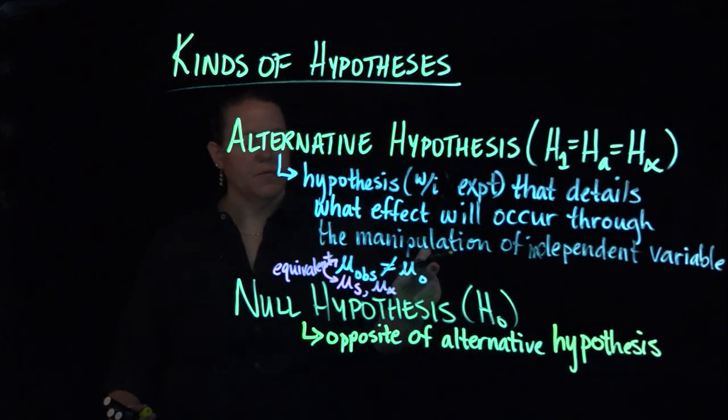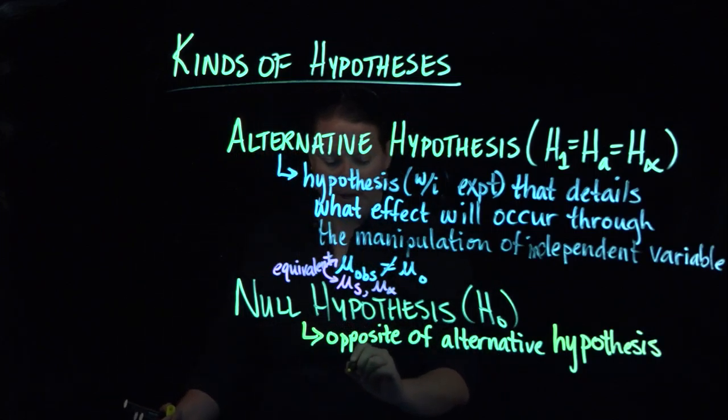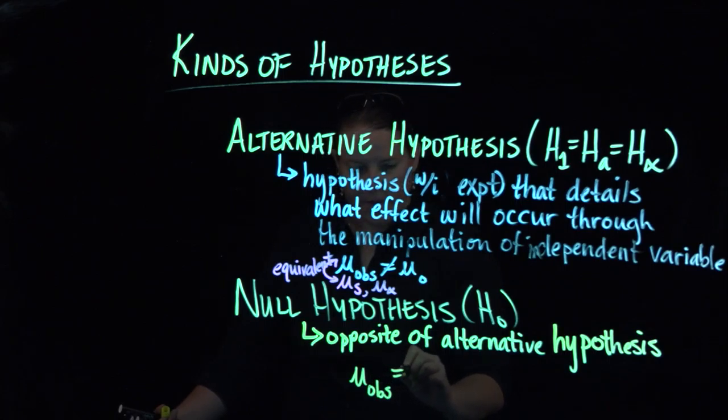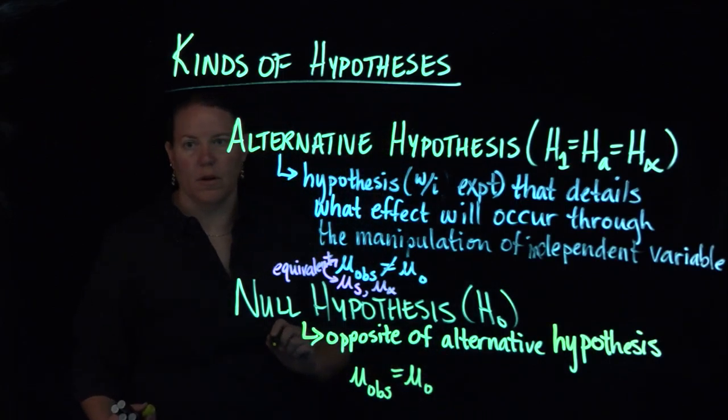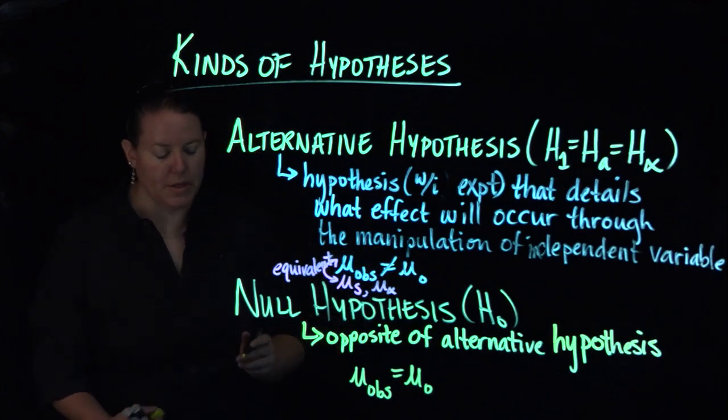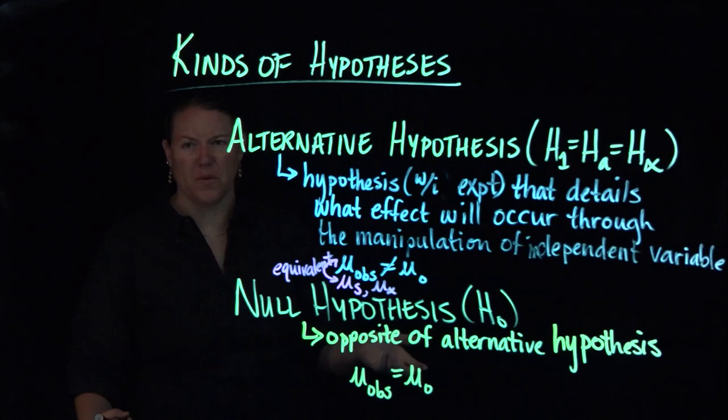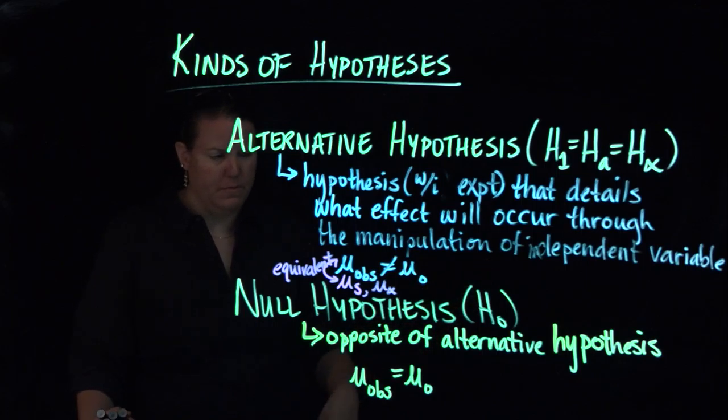So if this was my alternative hypothesis, then my null hypothesis is that mu observed is equal to the mu, the population mean that's known. This is assuming, of course, that a population mean would be known. It's a pretty big parameter to know, but this is the assumption that we're making.